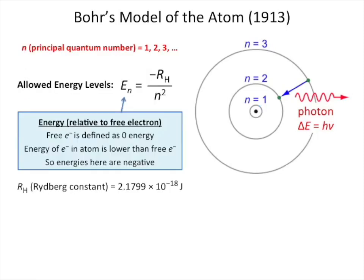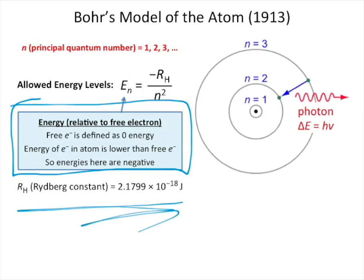So these allowed energy levels are equal to the Rydberg constant and n, which is the number of the energy level squared. So we have our definition here that we define energy relative to a free electron, so an electron just floating around outside of the atom. And then here's the constant, named after Rydberg himself.